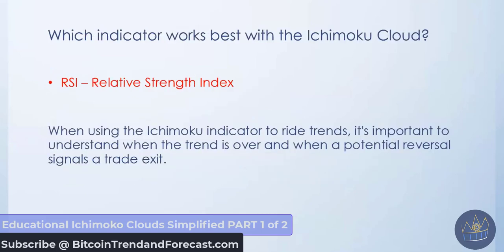Which indicator works best with the Itchy Moco Cloud? The RSI — the Relative Strength Index — and we teach that in our courses as well. Some experienced traders trade solely based on the RSI; it is one of the most powerful indicator tools for long-term trading. When using the Itchy Moco indicator to ride the trends, it's important to understand when the trend is over and when a potential reversal signals a trade exit. You want to use your RSI to see if it's overbought or oversold, hitting the tops and lows for your reversal trends.